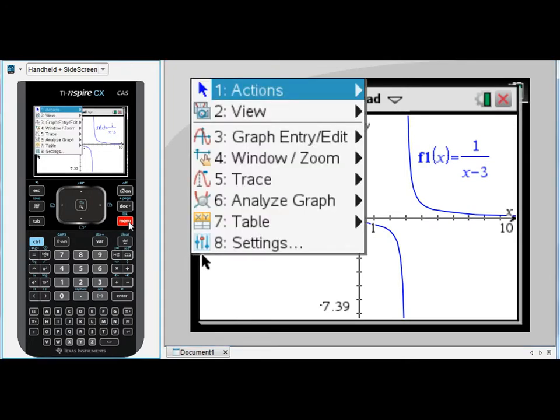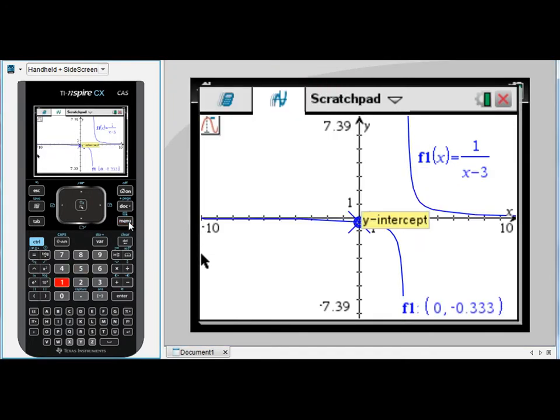I'll go to menu 5 for trace, 1 for graph trace. Again it will jump to the y-intercept as the default start position. Your graphing screen only works in decimals, so you need to recognize that actually that y-intercept is at negative a third. There are also other ways to deal with that and we'll look at those in a later video.